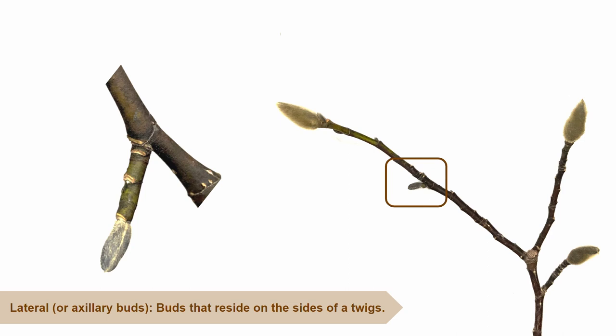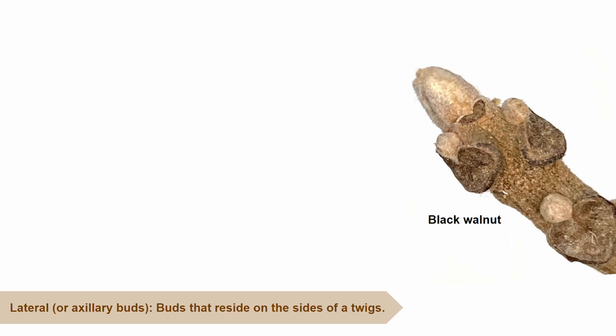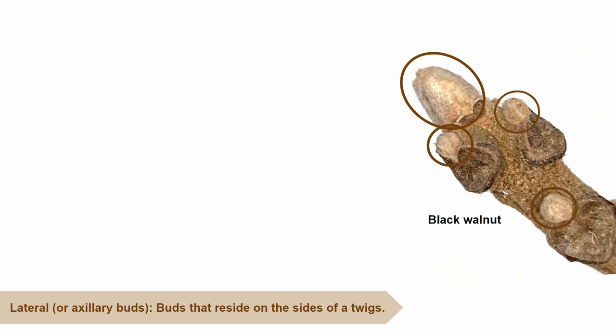In many tree species, there are significant differences between apical and lateral buds. For instance, here is a picture of a black walnut twig. The apical bud is at the end of the twig, is larger, and is more oblong than the lateral buds. There are three lateral buds on this black walnut twig. They are smaller and more circular than the apical bud.